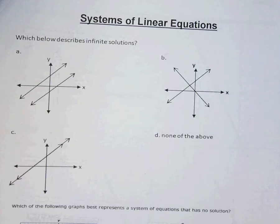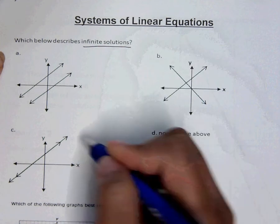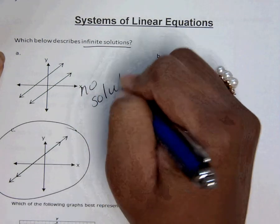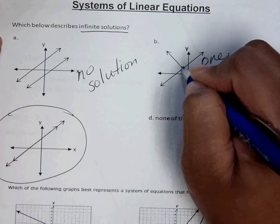Let's do systems. We know that infinite solutions are going to be when it is the same equation. So let's see, this would be no solution because they don't cross. This would be one solution because they meet here.